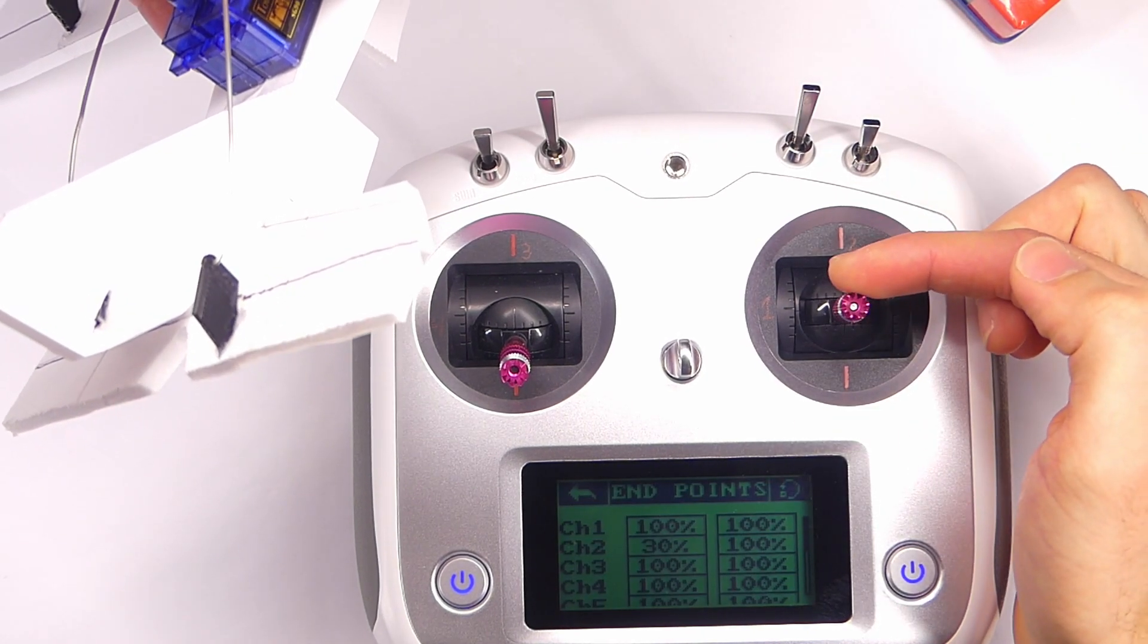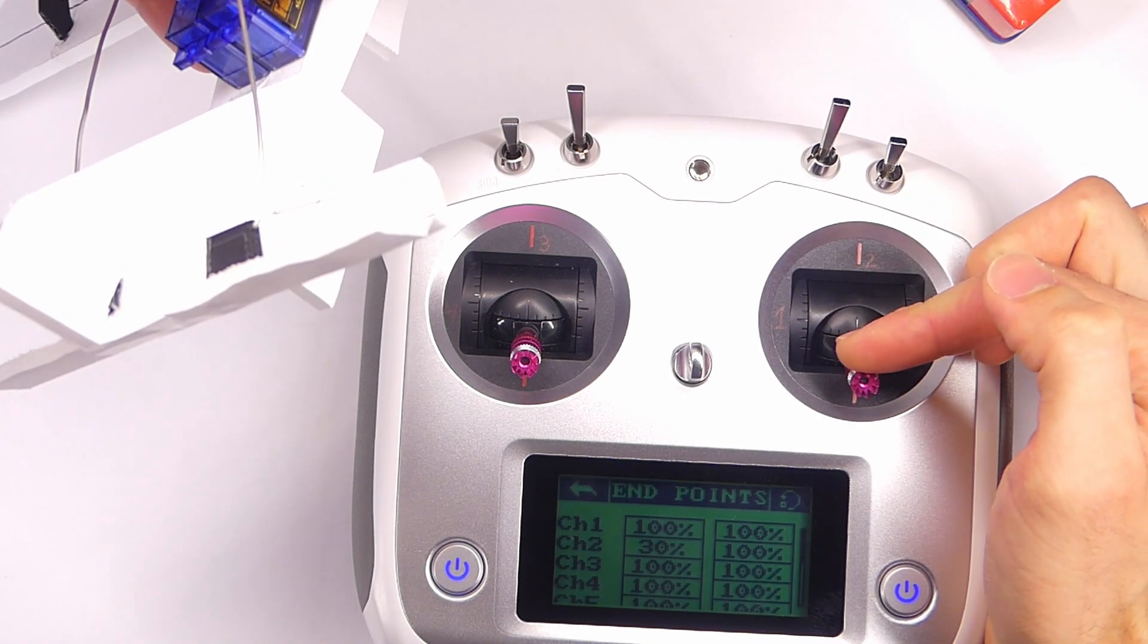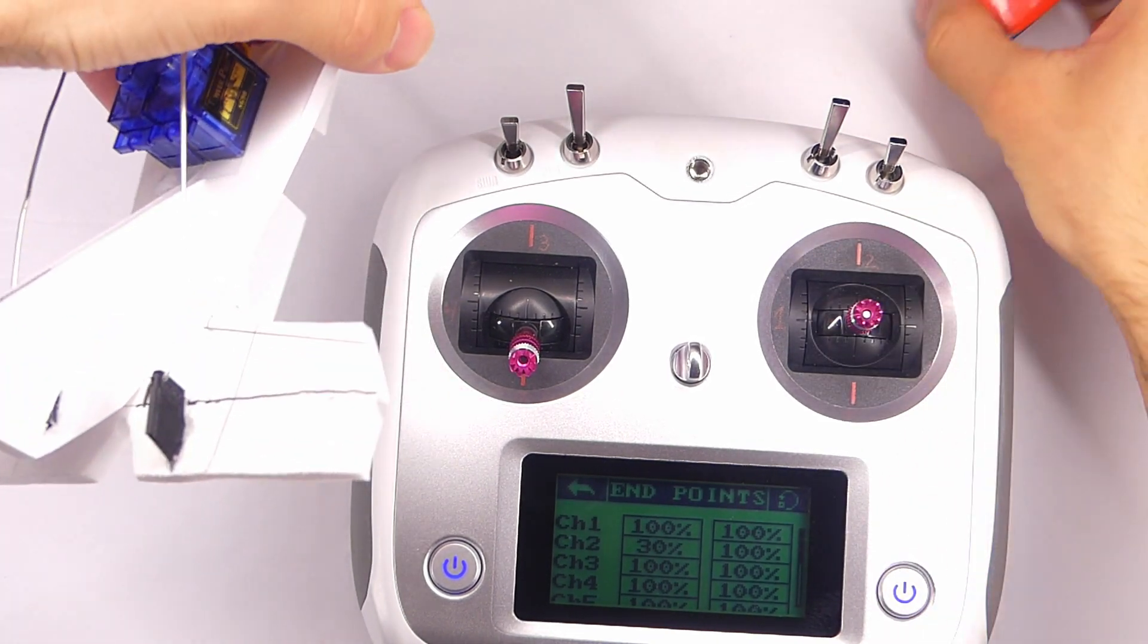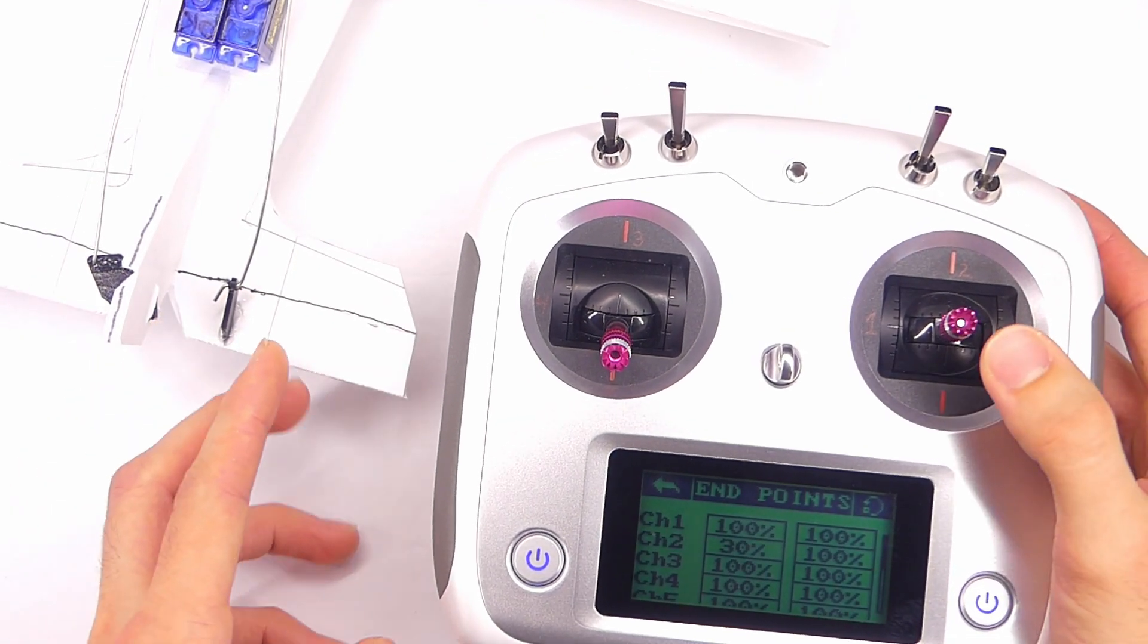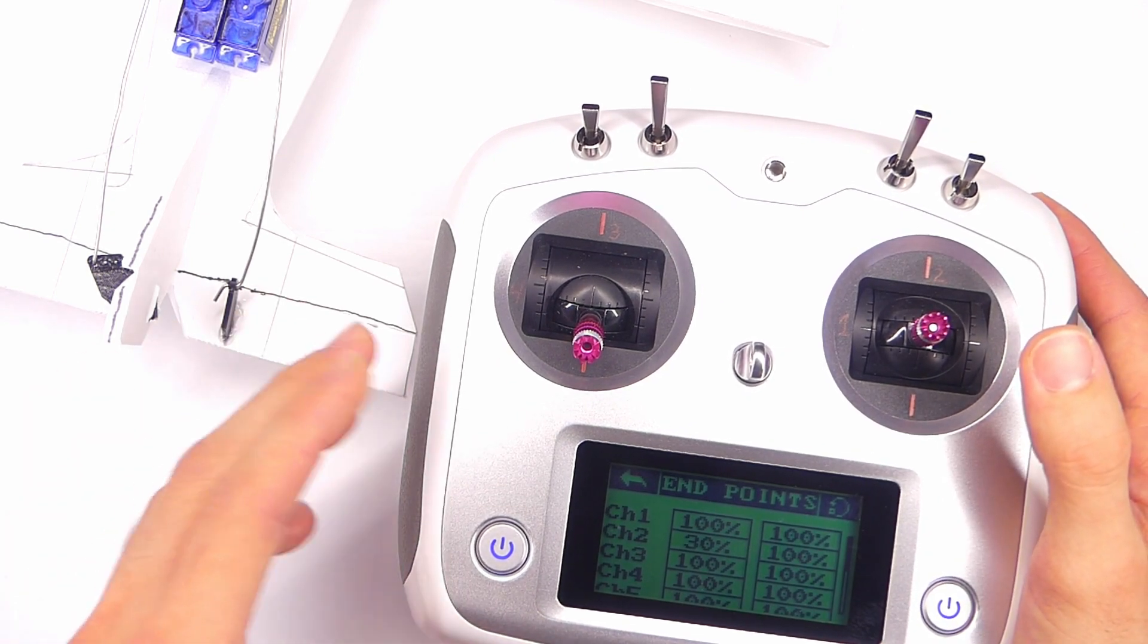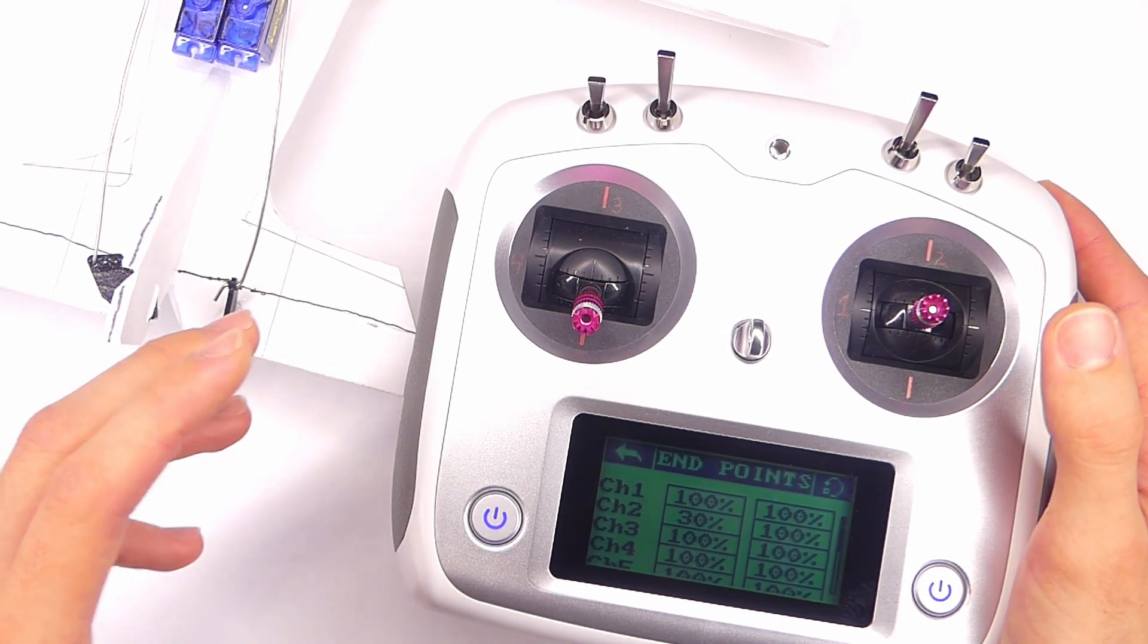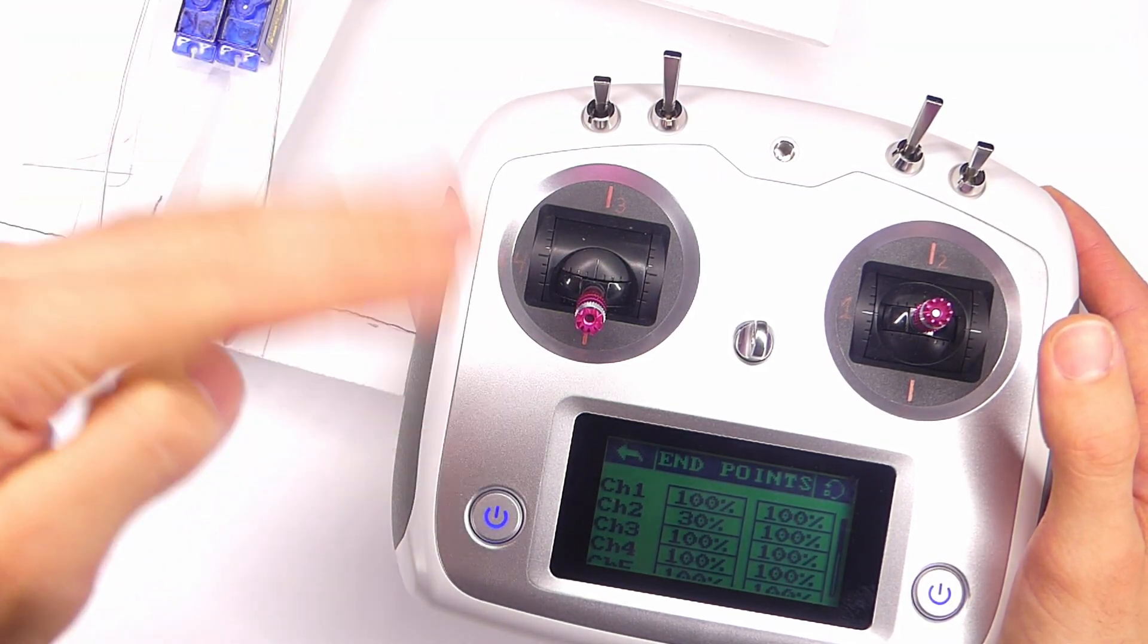But if we pull back on the stick, the elevator still comes way up just like it was before. And that's great because we could limit the movement of the elevator in the rates and expo feature, but that would only adjust the rates in both directions.